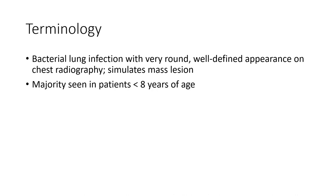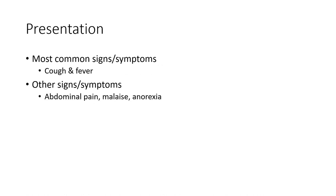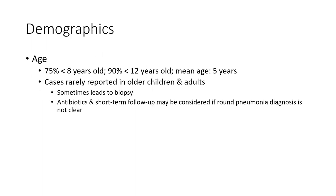Terminology: round pneumonia is a bacterial lung infection with a very round, well-defined opacity on chest radiograph that can simulate a mass lesion. It is seen in the majority of patients less than eight years of age. The most common signs and symptoms are cough and fever, with other symptoms including abdominal pain, malaise, and anorexia.